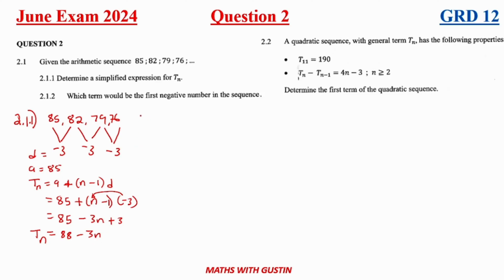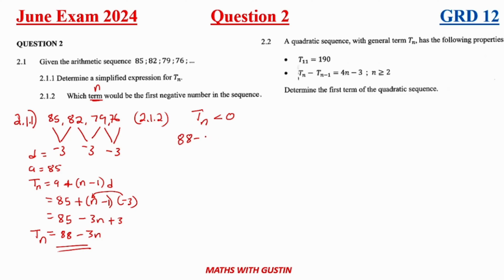Question 2.1.2 asks which term would be the first negative term in the sequence. A negative term means Tn is less than zero. We already have Tn = 88 - 3n, so we substitute and set 88 minus 3n less than zero, then take 88 to the other side to get negative 3n less than 88.